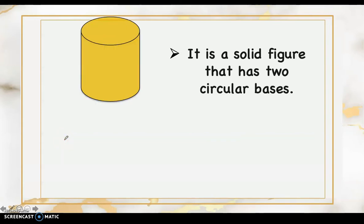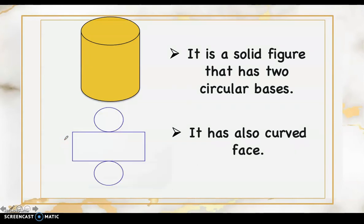Good day everyone. Let's start our lesson by recalling and describing a cylinder. A cylinder is a solid figure that has two circular bases and a curved face. Here is the net of the cylinder. A cylinder's two bases are circles only, unlike pyramids and prisms that have different kinds according to their base.